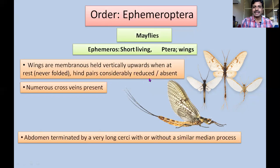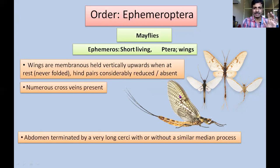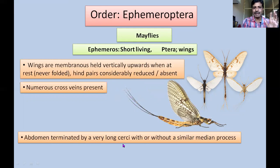Hind wings are considerably reduced — they are very small compared to the forewings. In some species, hind wings may be absent. Numerous cross veins are present — you can see a large number of longitudinal veins and cross veins. The abdomen is terminated by very long cerci. You can see two cerci which are very long, and in some species a median caudal filament may be present or absent. So the abdomen terminates in very long cerci with or without a similar median process.